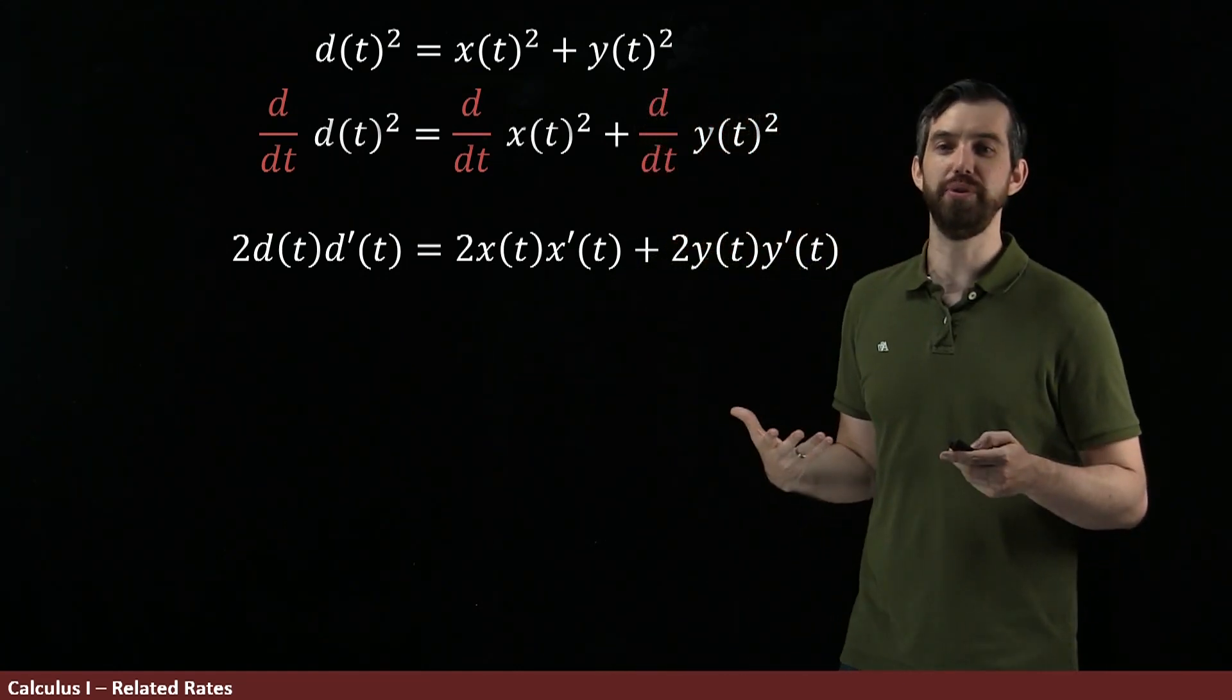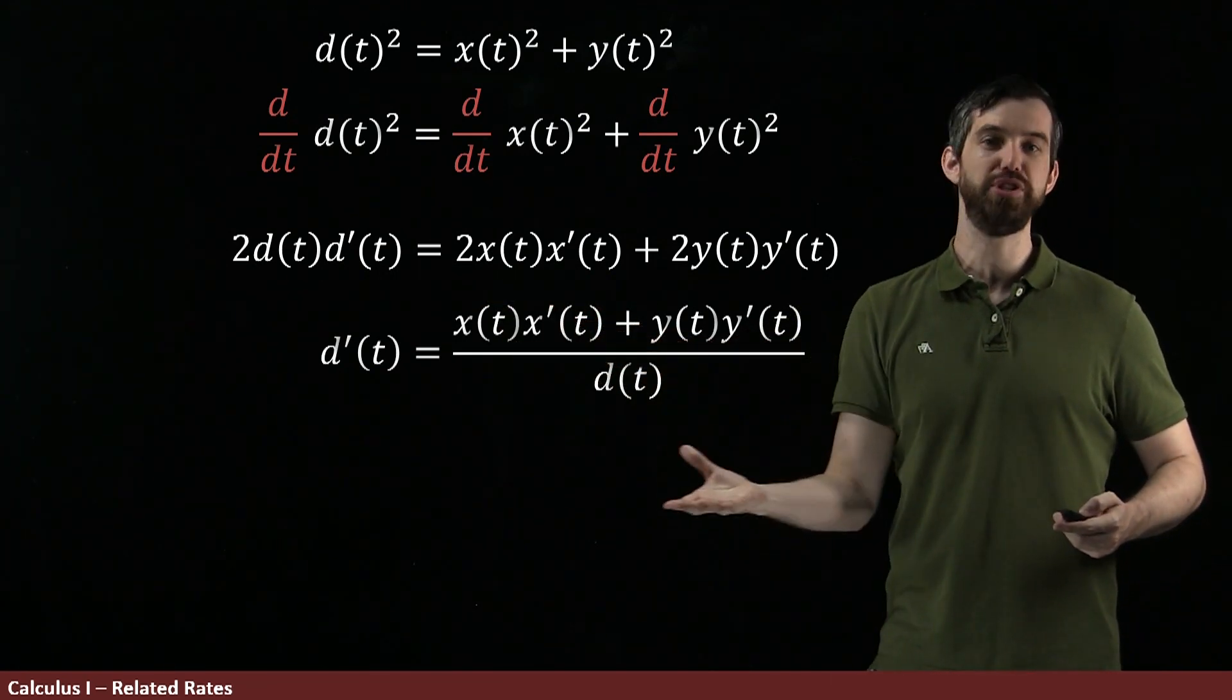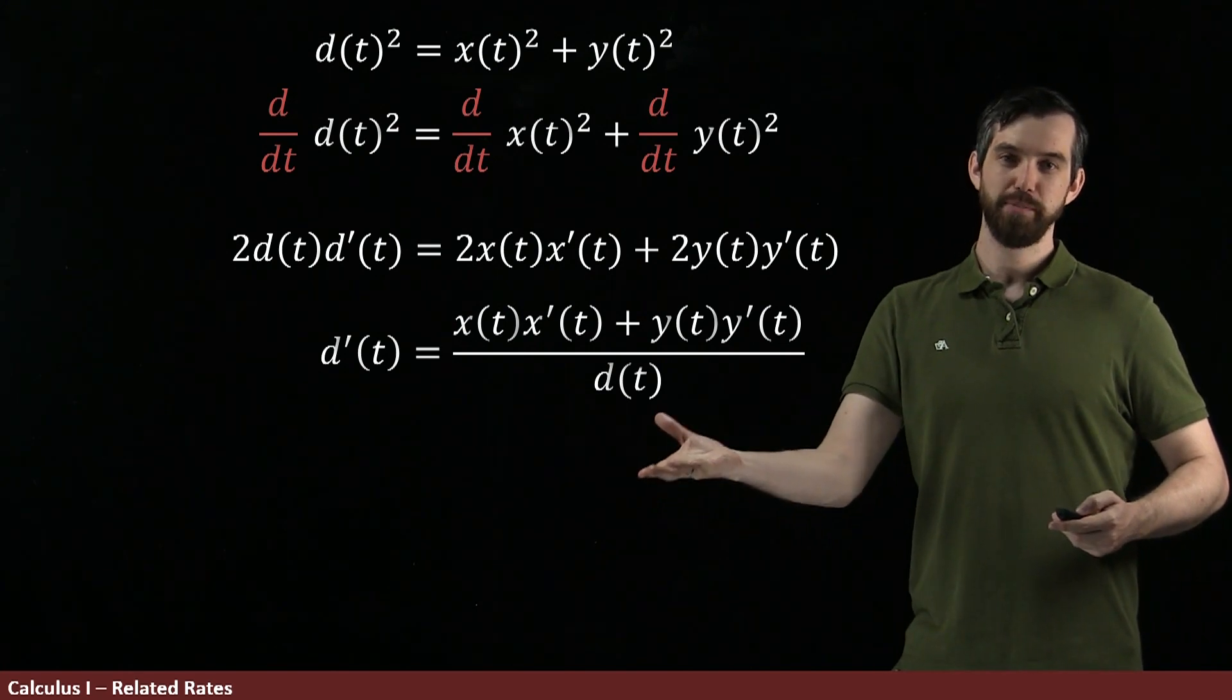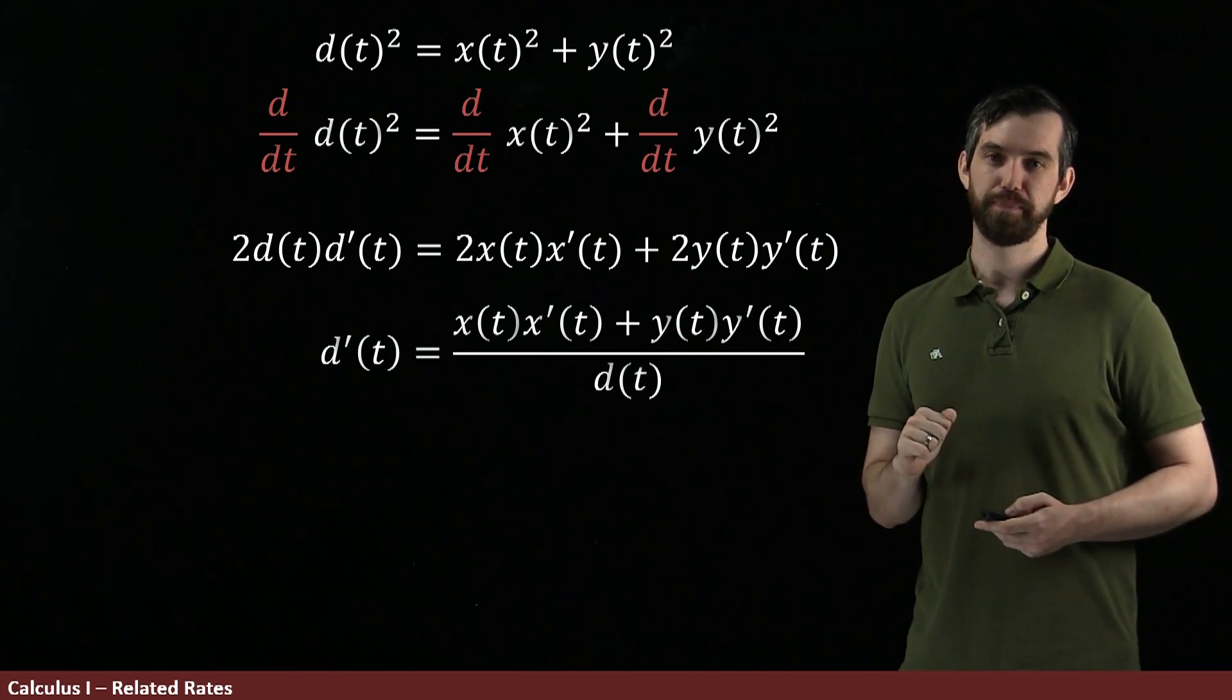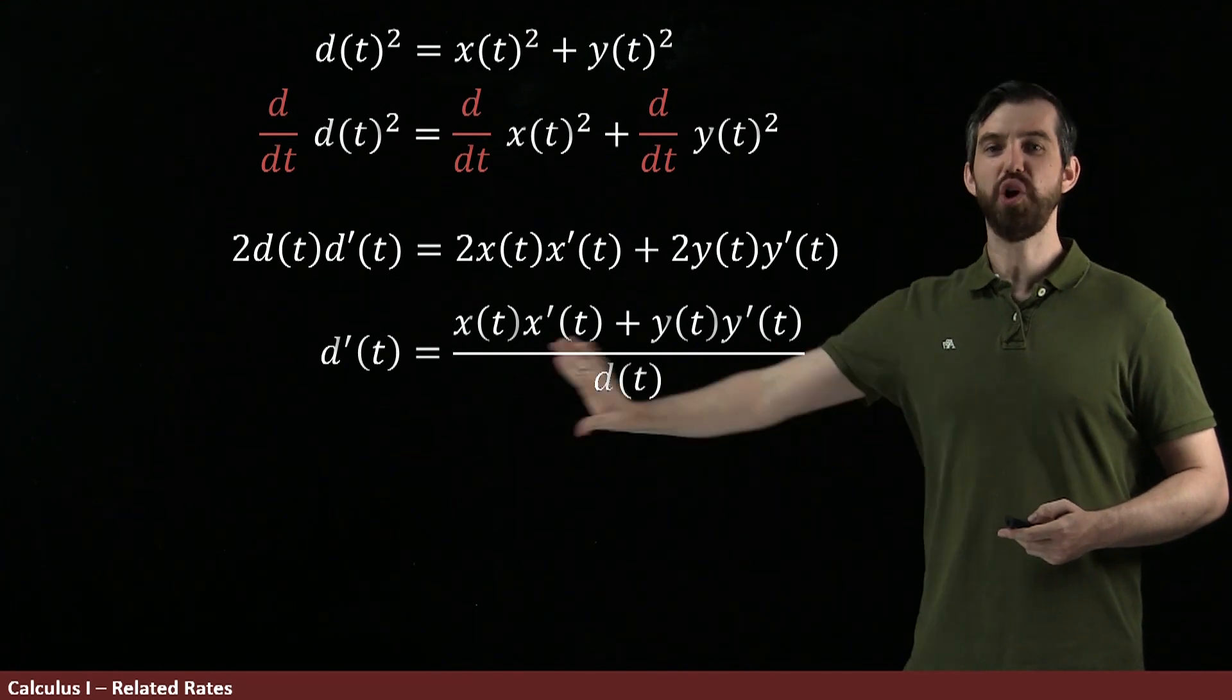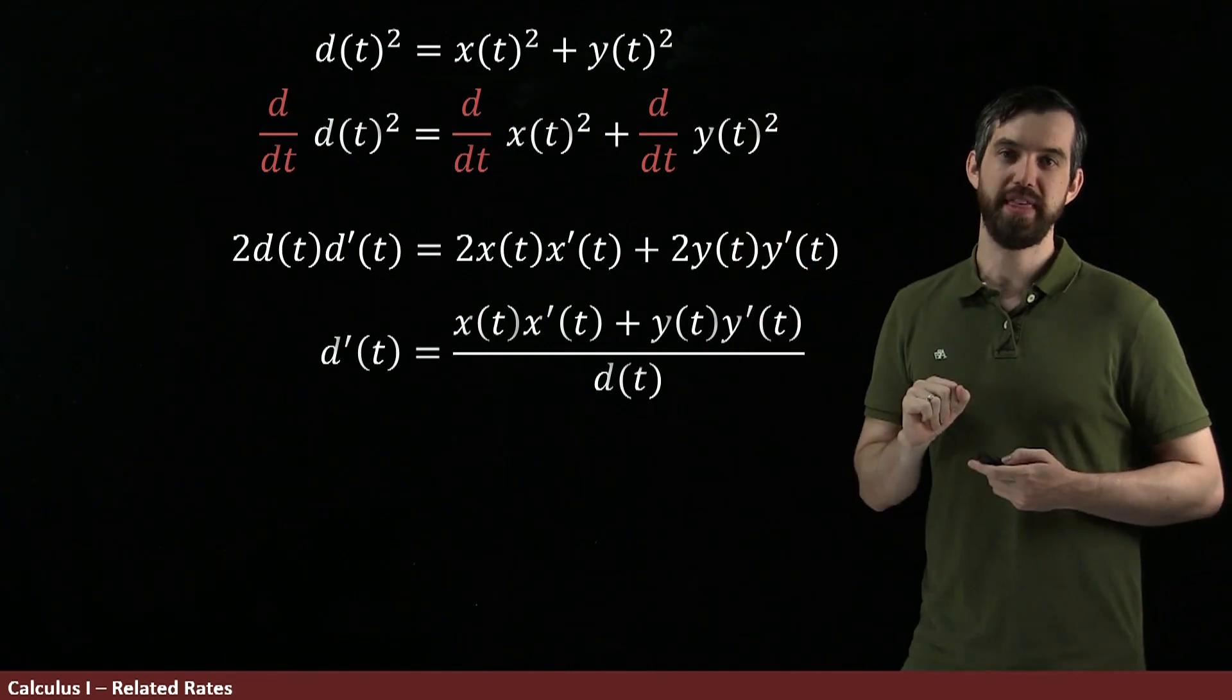Then what I can do is I can rearrange this formula, and by dividing out the 2d, I get that the d prime is just going to be equal to the x, x prime, plus the y, y prime, all divided by the d, and I've canceled out the twos. Okay, so we've got to this formula by taking the derivative of our original Pythagorean equation.